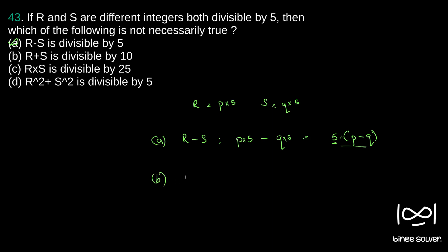Now let us take B. The statement is: R plus S is divisible by 10. R plus S equals P into 5 plus Q into 5, which becomes 5 into (P plus Q). Now, 5 into (P plus Q) is divisible by 10 only if P plus Q is divisible by 2 — this need not be true always.